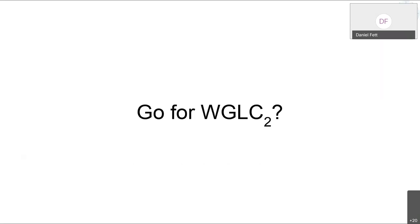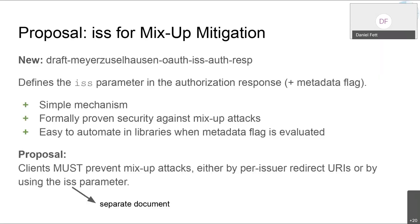Mike Jones: If you're using an ID token, you already have the issuer value, so you don't need the separate ISS parameter. Just like we handled nonce, the document should describe that if you have an ID token in your flow, you already have the issuer and can use it.